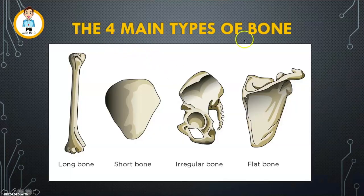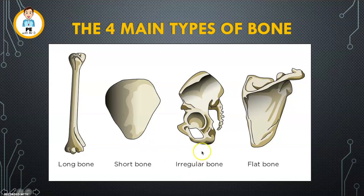Now we're going to look at the four main types of bones. We have the long bone, as we were looking at before. We have the short bone. We have the irregular bone. And we have the flat bone. There's not too much creativity here, which is useful for us when we need to identify which types of bones are which.